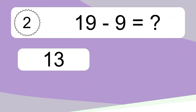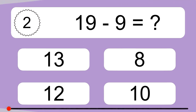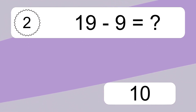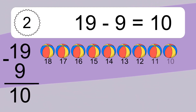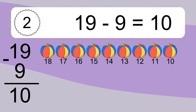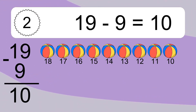19 minus 9 equals what? 19 minus 9 equals 10. Let's count it: 18, 17, 16, 15, 14, 13, 12, 11, 10.